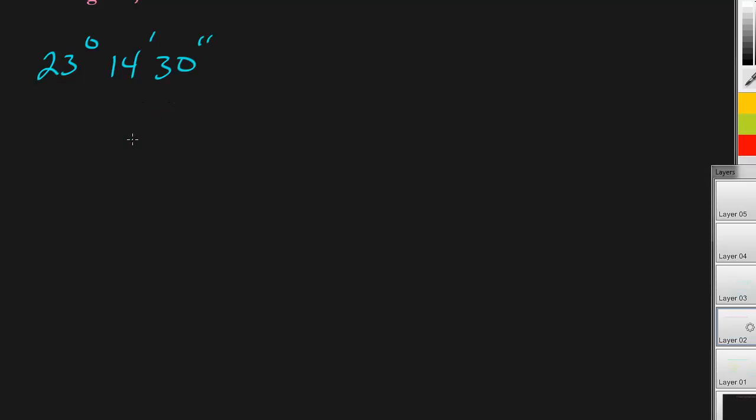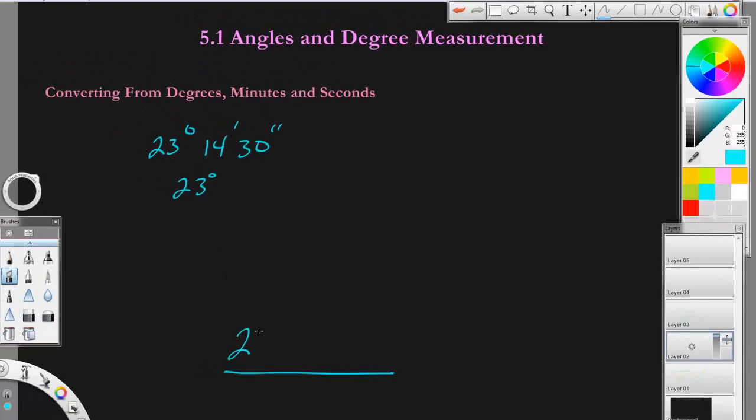Let's say we had 23 degrees, 14 minutes, and 30 seconds. To do this problem, it definitely takes a calculator. The 23 is going to be 23 degrees, so we're going to decimals here. It's going to be 23 points something. Now, what you do is you're going to add to this 14 divided by 60, and then we're going to add to that 30 divided by 3600. This is the number of seconds in an hour, and this is the number of minutes in an hour.